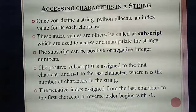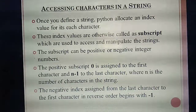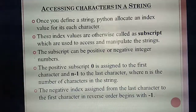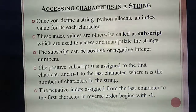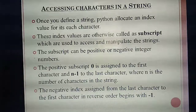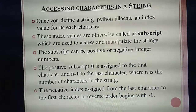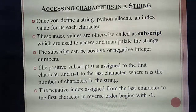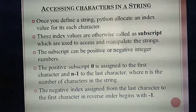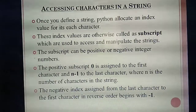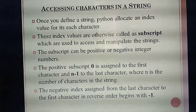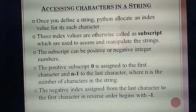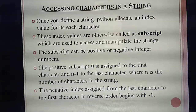The index value, otherwise called subscript, can be either a positive integer or a negative integer. If positive, the index value starts from zero — like an array. The starting index value is zero from the first character, and the last character is n minus one. For example, the word 'computer' has eight characters: C-O-M-P-U-T-E-R. The index starts at zero and the last index is seven, which is n minus one.